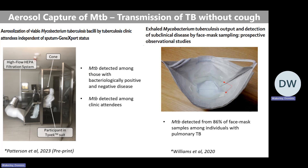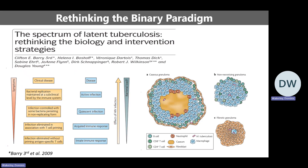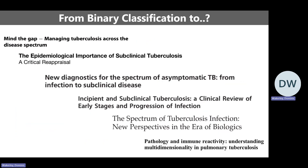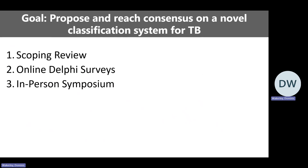All this evidence led to a rethink. The first paper that made people reconsider was one by Clifton Barry at the NIH back in 2009, suggesting we need to rethink the current classification of latent and active TB, and that there's potentially a spectrum of disease states within this process. Since then, several review articles and commentaries proposed new frameworks. That brings us to the ICE-TB framework — our goal was to propose and reach consensus on a novel classification system for TB, done through a three-step process.